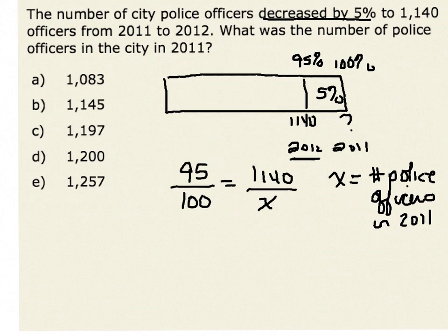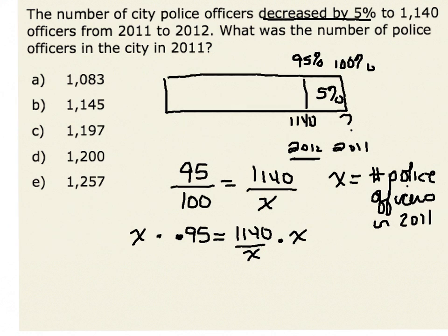One way that I can solve this problem is to recognize that 95 divided by 100 is the decimal 0.95. That's still equal to 1,140 divided by x, or the number of police officers in 2011. Multiplying both sides by x, we get the equation 0.95x is equal to 1,140.